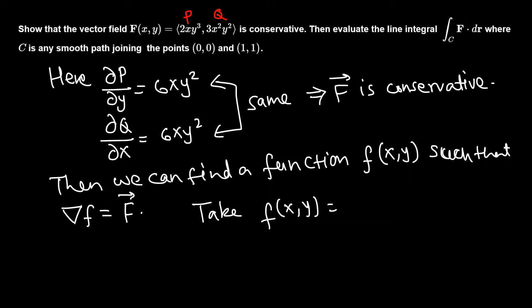Looking at the first term, when we integrate with respect to x, y³ will be constant, 2x, and the derivative of 2x is x², so x²y³. Let's guess this. If we find the partial with respect to x, that's 2xy³, so we have that.